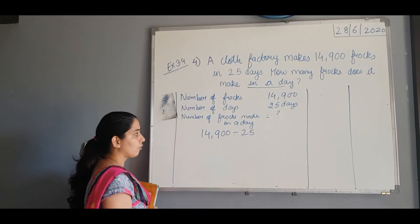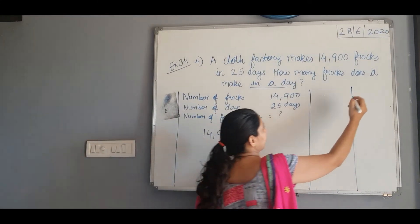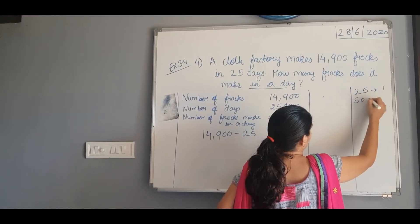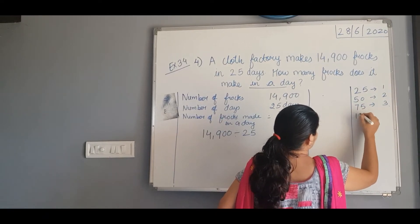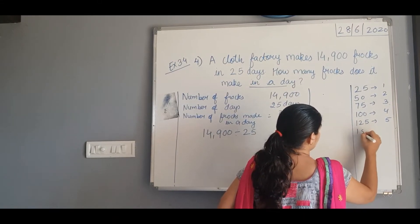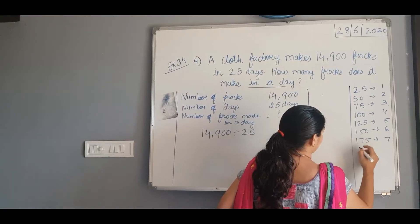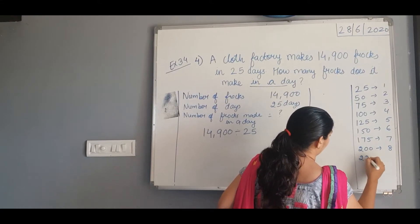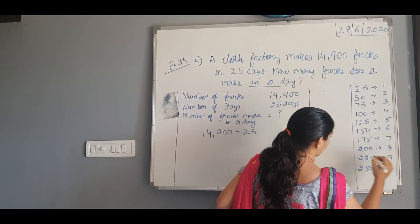First of all, for this division we should know the table of 25. So we will write the table of 25: 25 ones are 25, 25 twos are 50, 25 threes are 75, 25 fours are 100, 25 fives are 125, 25 sixes are 150, 25 sevens are 175, 25 eights are 200, 25 nines are 225, and 25 tens are 250.